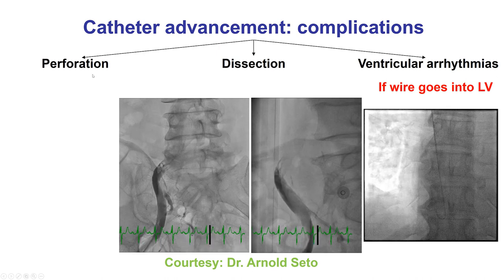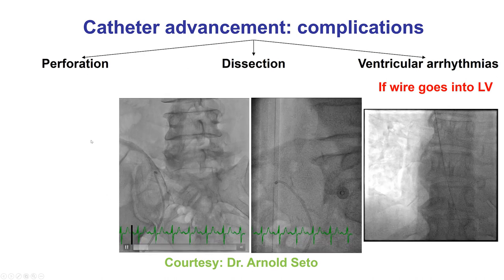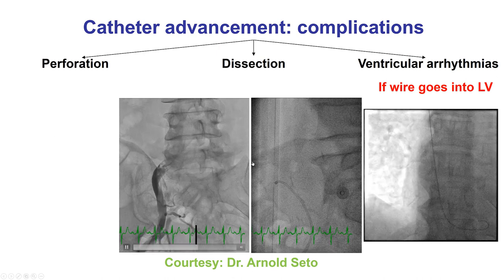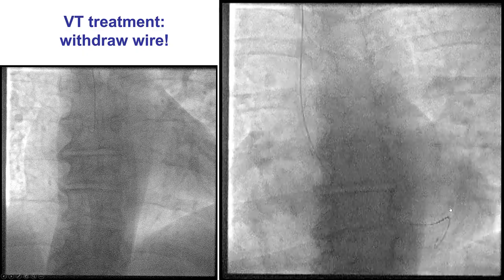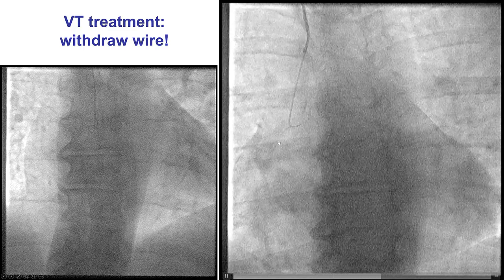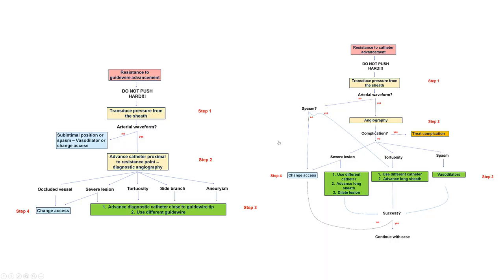Advancing a wire and a catheter can cause complications such as dissection, perforation, and arrhythmias — that is why it is important to never push hard. Arrhythmias can happen if the wire enters into the ventricle, and the solution is to pull the wire back to prevent ventricular ectopy. In summary, resistance to guide wire and catheter advancement can happen from both femoral and radial axis. Never push hard; instead, transduce pressure from the sheath to ensure you are in the vessel, perform angiography to understand the cause of resistance, and find ways to overcome it.